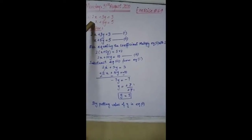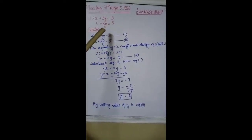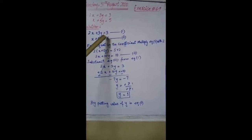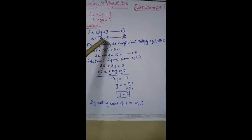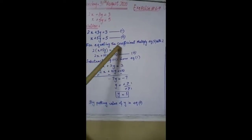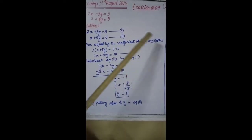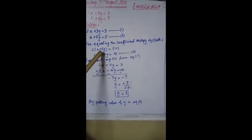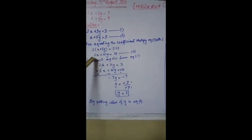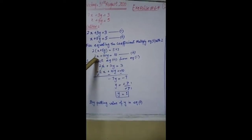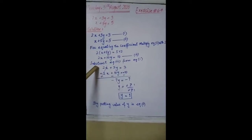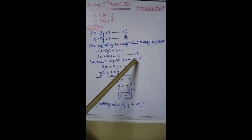Part 3: 2x + 3y = 3, and x + 5y = 5. 2x + 3y = 3 is our first equation, and x + 5y = 5 is our second equation. For equating the coefficients, multiply equation 2 by 2: 2(x + 5y) = 5 × 2, giving 2x + 10y = 10, which is our third equation.